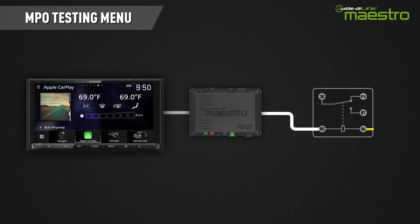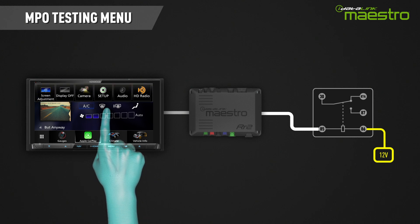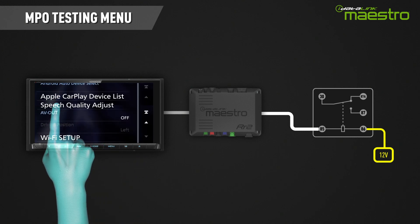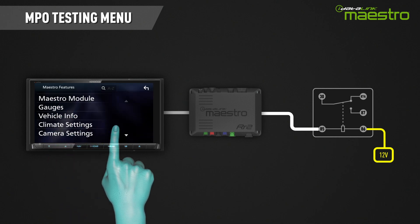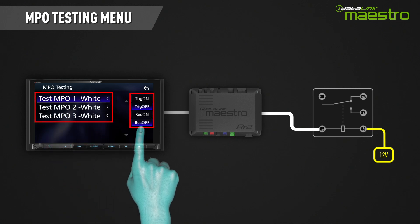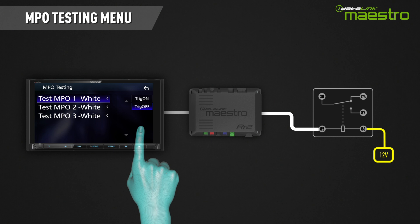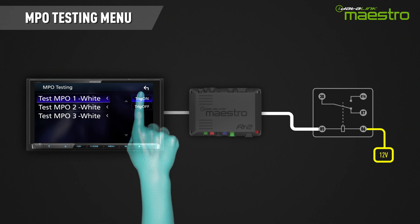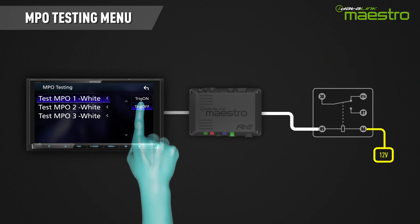After you have installed it into the vehicle, you can test each output before connecting it to the device it will be controlling. Go into the OEM setup menu on your radio, then select Maestro Module, MPO Settings, then MPO Testing. Each output and wire color will be listed along with buttons for trigger on, trigger off, reset on, and reset off. In the case of the follower example, only trigger on and off will be available as there is no reset signal. When we press trigger on, the MPO becomes active and the LED on the Maestro RR2 turns red simulating the left turn signal. When we press trigger off, the MPO goes inactive and the LED turns off.